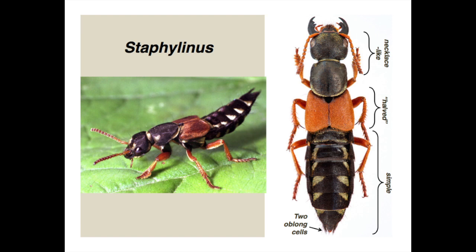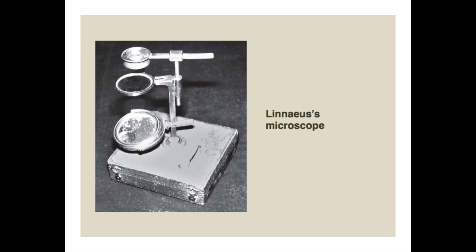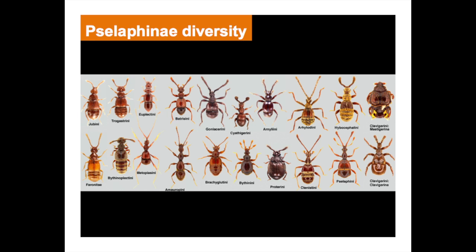Linnaeus' description doesn't really do Staphylinus justice. Since Systema Naturae was published, species descriptions have come a very long way. Linnaeus could have included illustrations because he did have a microscope, but it's widely believed he didn't really use it much. Many of his descriptions are just text-based — he did occasionally do drawings, but normally of things visible to the naked eye.